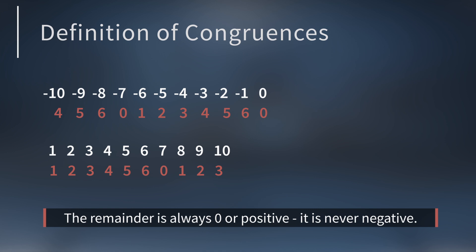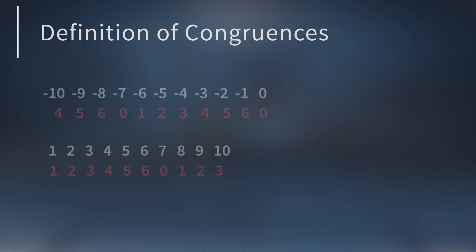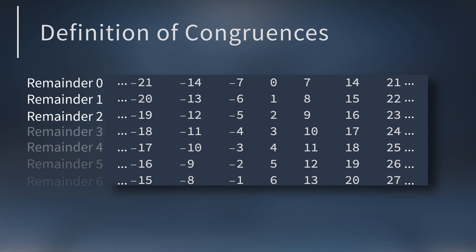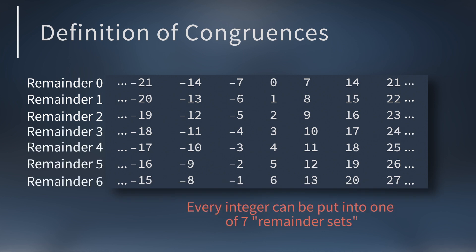Let's group the integers into sets by their remainder. The first will be all the integers with a remainder of 0 when you divide by 7. The next will be those with a remainder of 1, then 2, and so on. So every integer can be put into one of 7 remainder sets.